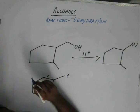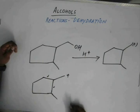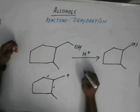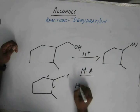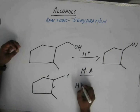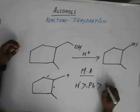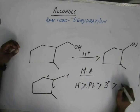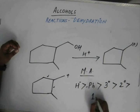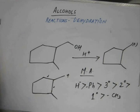The migratory aptitude of the groups depends on the charge density. The migratory aptitude of the hydride ion is more than phenyl is more than three degree is more than two degree is more than one degree is more than CH3, methyl.